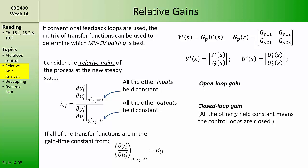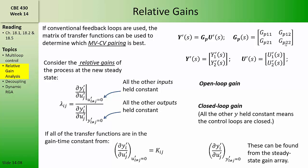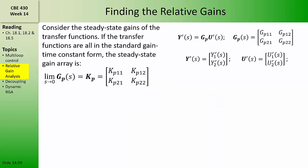If we write all of the transfer functions in the gain and time constants form, then the open loop gains are simply computed from the gains of the process transfer functions GP11, GP12, GP21, and GP22. The closed loop gains can be found from what we call the steady state gain array. The steady state gain array is an array containing the gains of the transfer functions from our transfer function matrix.